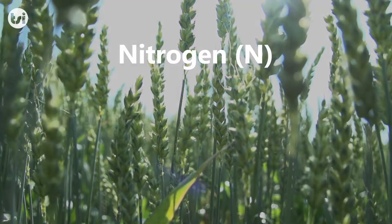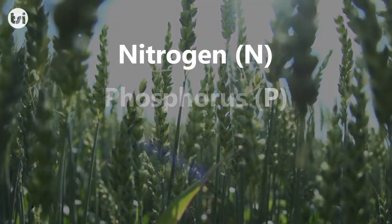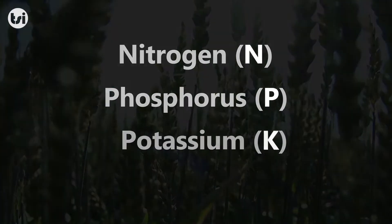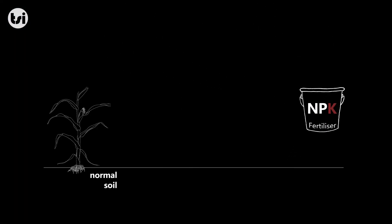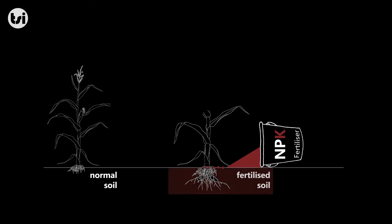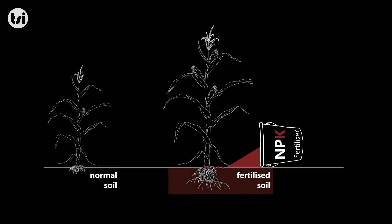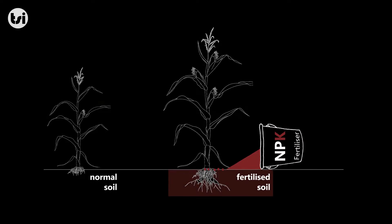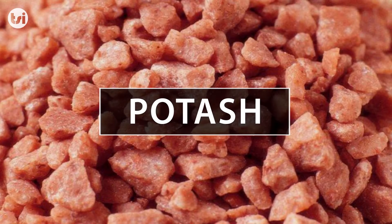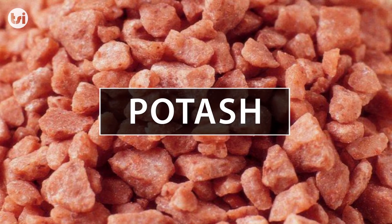Together with nitrogen and phosphorus, potassium is a key element that is used in fertilisers as it is essential for plant growth. Fertilisers containing potassium are generally grouped under the name potash.